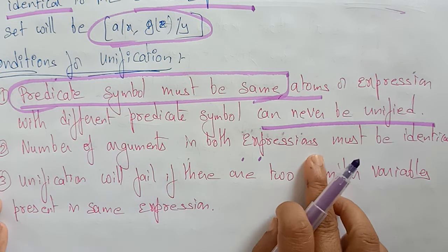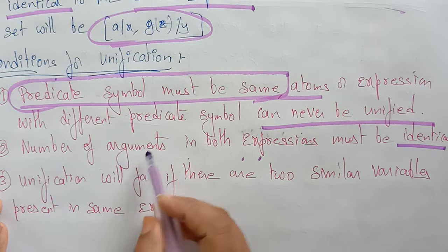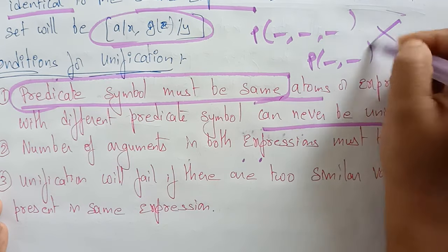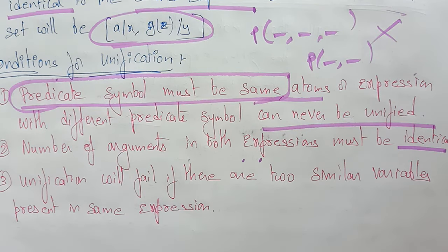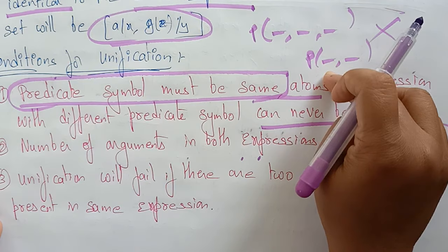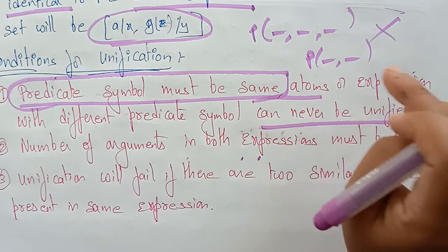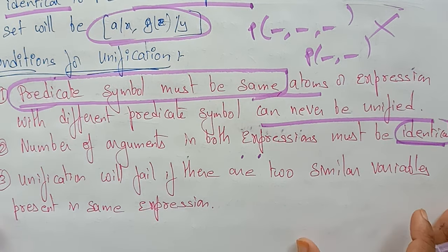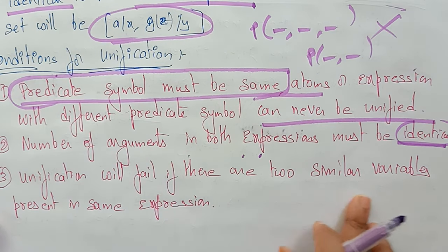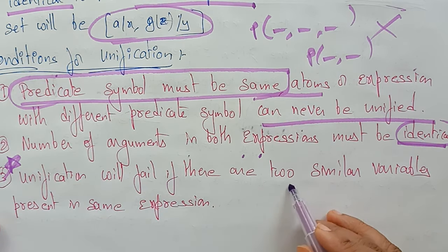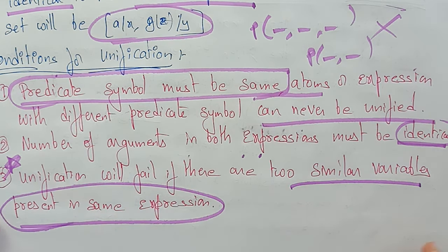The second condition: the number of arguments in both expressions must be identical. If you use three arguments in one statement and two arguments in another, these two statements cannot be identical. Then only, if both have the same number of arguments, can you make the expressions identical using the substitution method. Third condition: unification will fail if there are two similar variables present in the same expression. These are the conditions for unification.